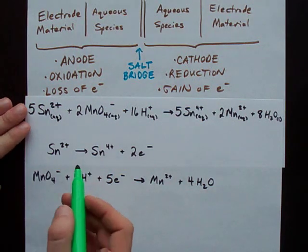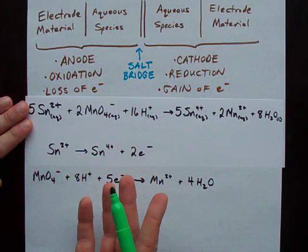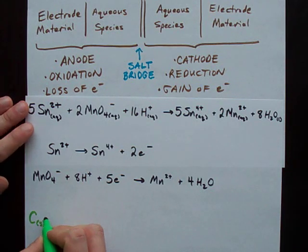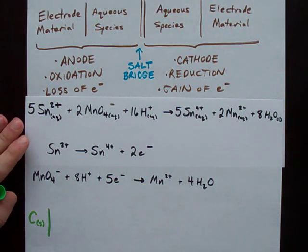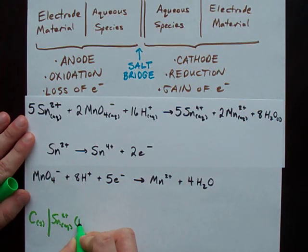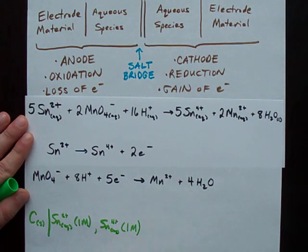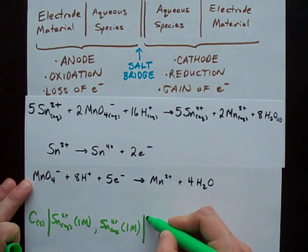But we have two aqueous species here. We don't know what the solid involved is. Let's assume it's graphite this time. Graphite electrode. Graphite, by the way, is solid carbon. Just FYI. Can you see what I'm writing there? Yes, you can. We've got Sn 2+ in solution on one side. Let's assume it's one mole per liter. We've got Sn 4+ on that side. Aqueous. And let's assume it's one mole per liter. That's it for the anode reaction. Double bar.